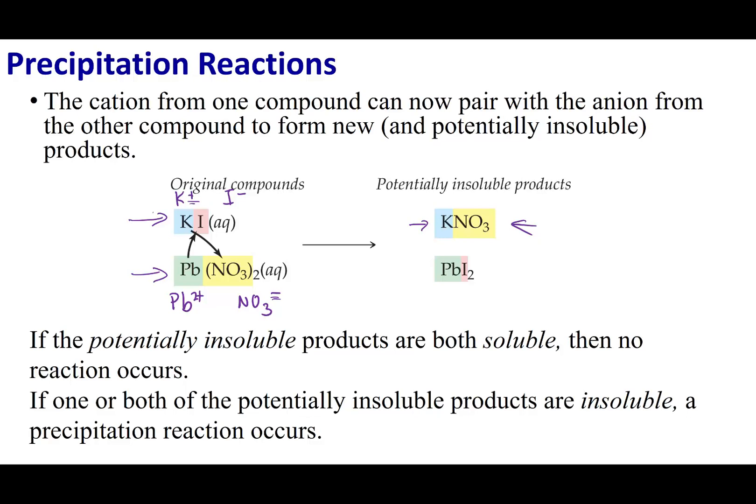For the other product, I bring lead together with iodide. The charge on lead is 2+ and iodide is 1−, so I need two iodides per lead. To have a neutral ionic complex, this has to be PbI2.